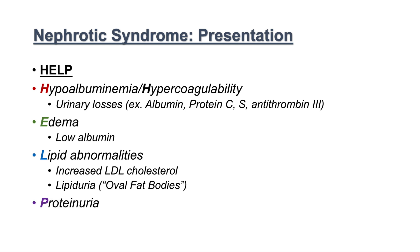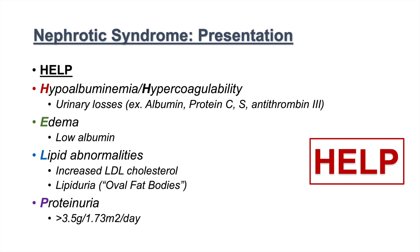And the last one is P for proteinuria, and this is the hallmark of nephrotic syndrome. Generally, a level of 3.5 grams or greater is necessary to consider a nephrotic syndrome — greater than 3.5 grams per 1.73 meters squared per day is the level of protein excretion in the urine necessary for definition of nephrotic syndrome. So again, to remember the clinical presentation, remember HELP: hypoalbuminemia and hypercoagulability, edema, lipid abnormalities, and proteinuria.